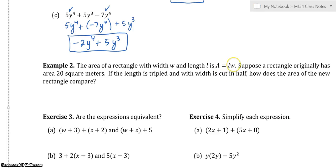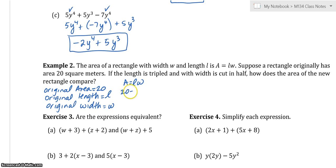Example two is an example where multiplication does not need to be like terms. We could take the length times the width. So suppose a rectangle originally has area of 20 square meters. Forgot to read the first line. The area of a rectangle with width w and length a is a equals length times width. This is a good formula to memorize because we're going to be using this formula quite a bit. If the length is tripled and the width is cut in half, how does the area of the new rectangle compare? Let's start with the original. So it said suppose a rectangle originally has area of 20 square meters. And that's the only information that it gives about the original. So we know that the original area is 20. The original length we'll call L and the original width we'll call W. So we know that A equals LW. So we get that 20 equals LW.